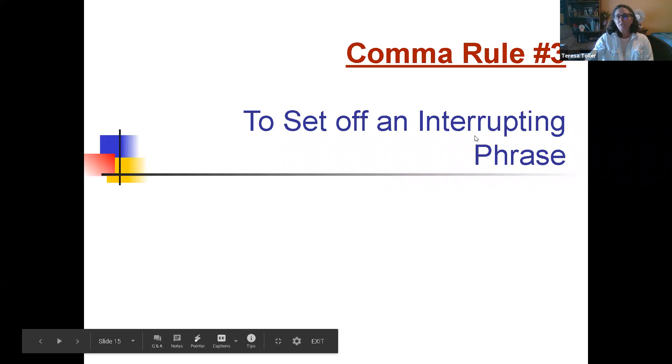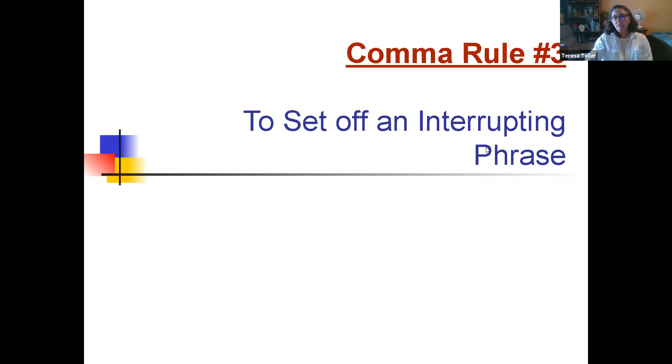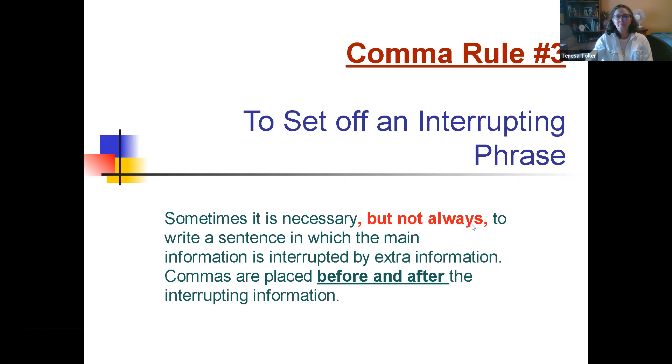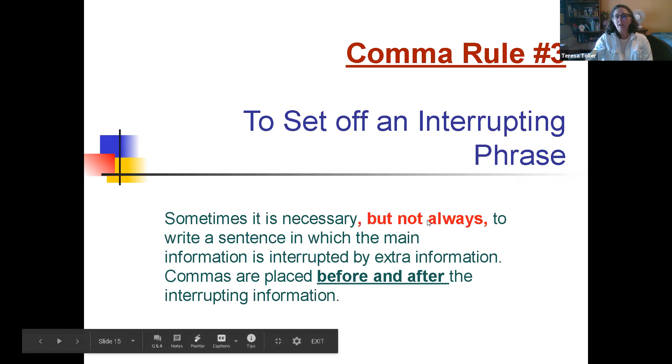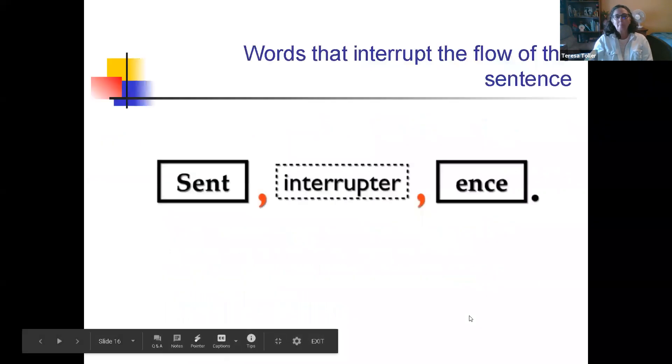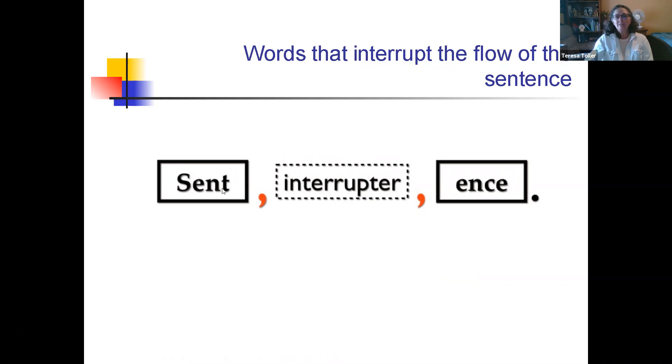Comma rule number three is to set off an interrupting phrase. The difference between an introductory phrase at the beginning of the sentence and interrupting phrase comes in the middle of the sentence. Commas this time are before and after the interruption. If you can take this out totally and it still makes sense, then you're good to go.